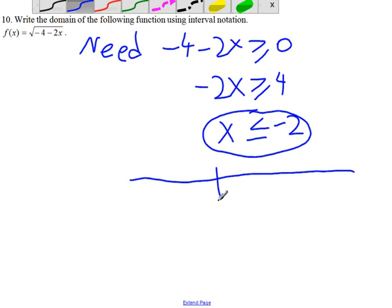Somewhere here is negative 2, and we're looking at all x values to the left of negative 2, including negative 2. So these numbers here, including the number negative 2.